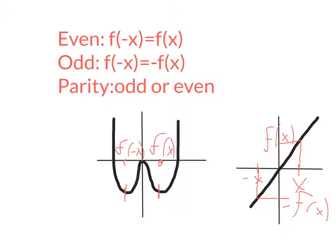So this would mean that the function is odd. If the function is neither odd nor even, for example, if it is like this, then we say that the function is neither.